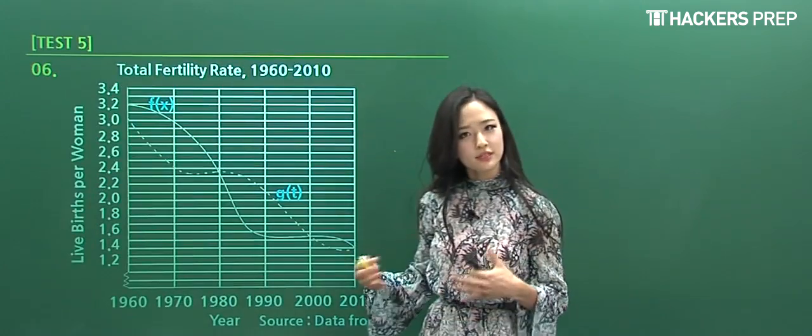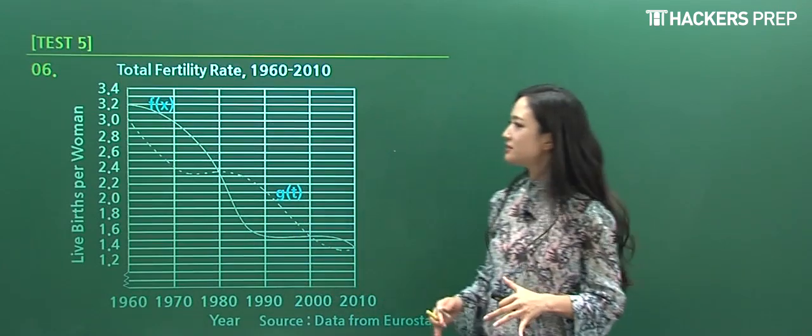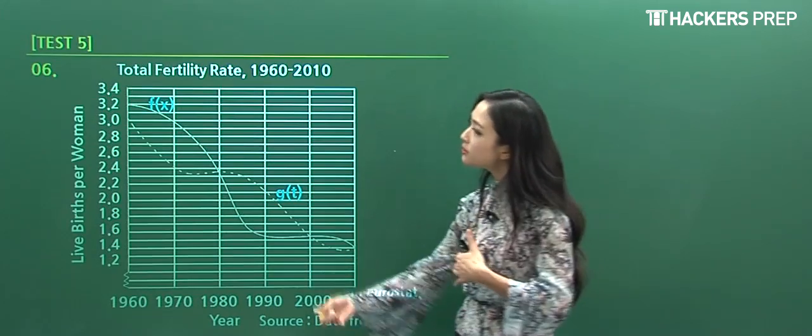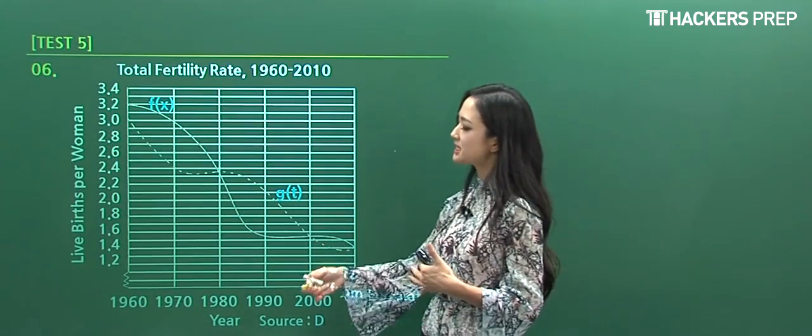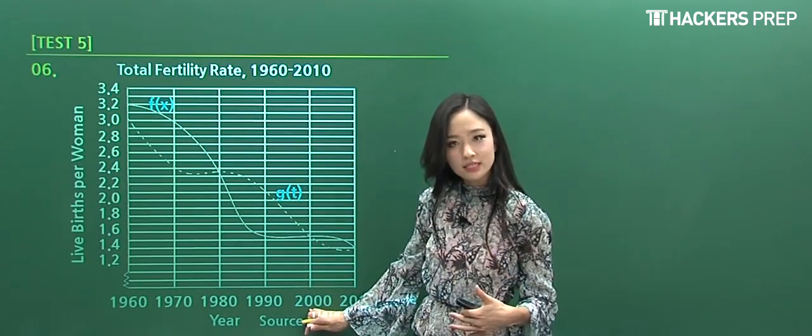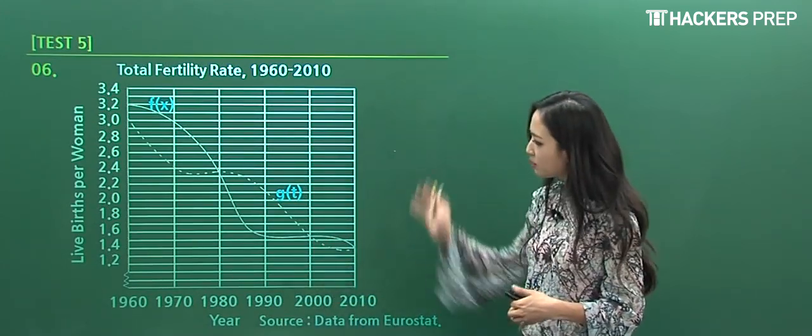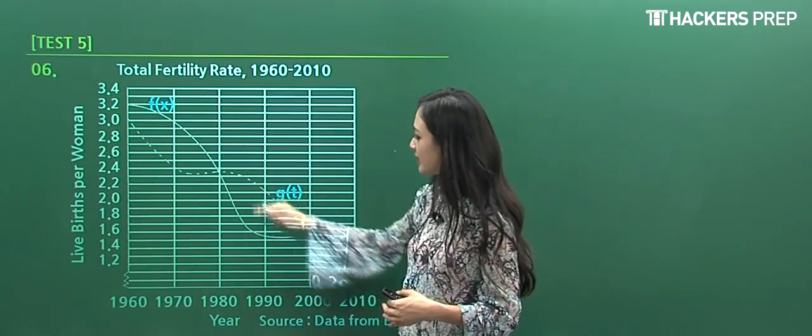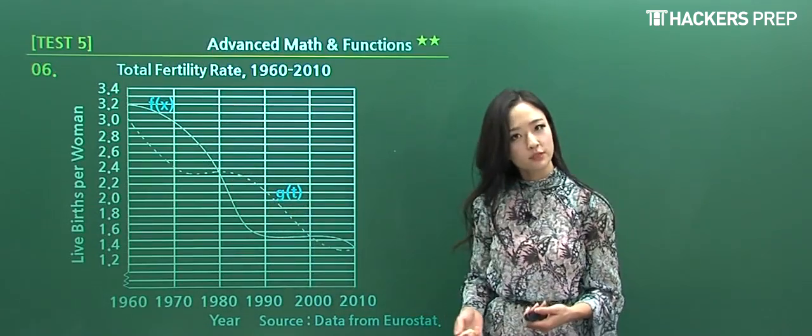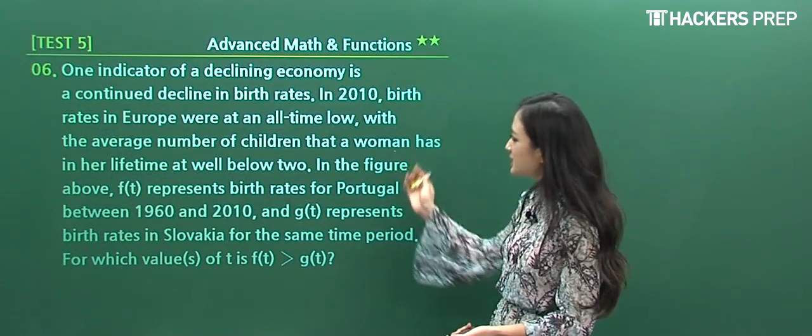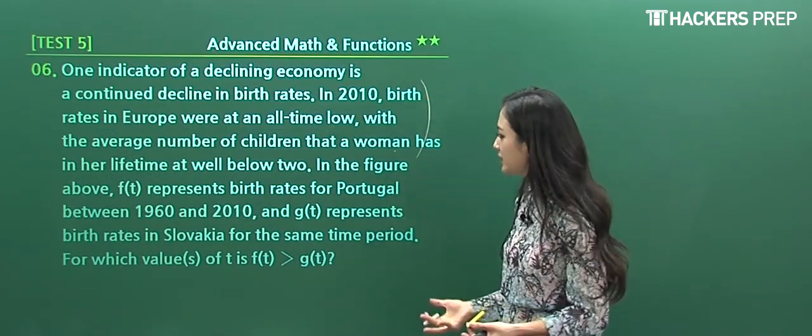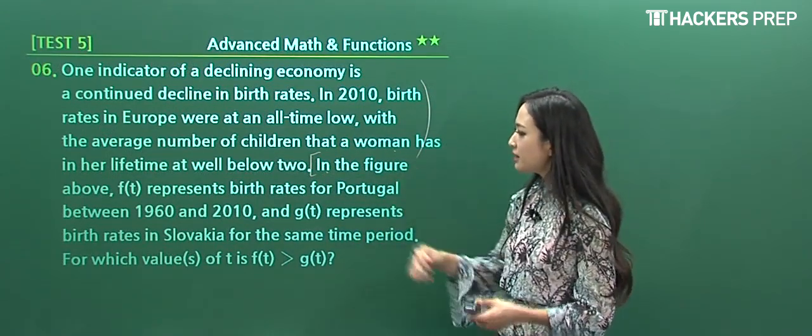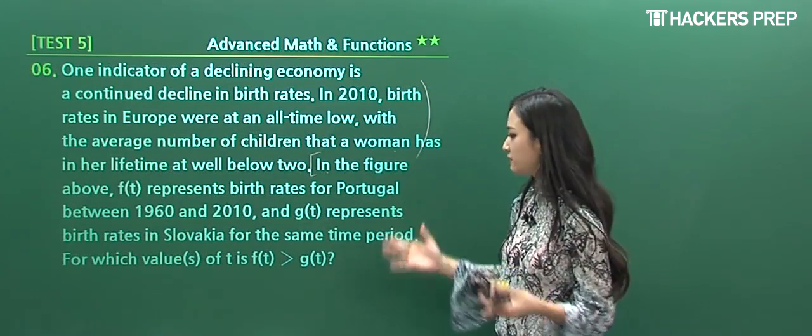Number six: when we have this complicated-looking chart, the basic step is to read the title and look at the x and y axes. We're looking at the total fertility rate from 1960 to 2010. The x-axis represents the year and the y-axis is births per woman. We have two functions: f and the dotted line g(t). The question tells us that f(t) represents birth rates for one specific country and g(t) represents a different country—we're comparing Portugal and Slovakia.